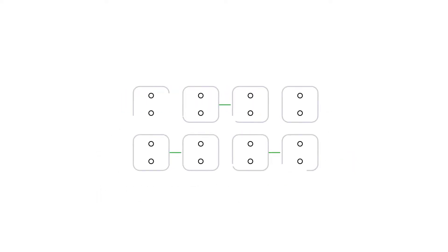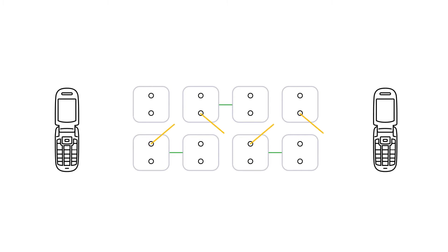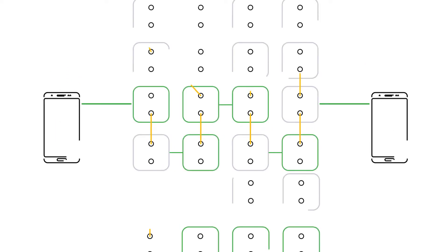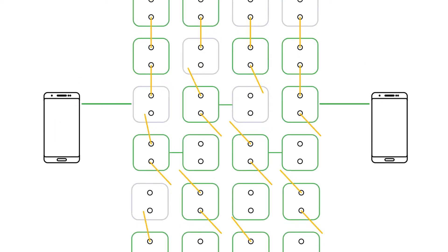The old model was based on circuit switching, where dedicated links were created for each call. This approach was optimized for voice to provide guaranteed quality, but was inefficient and not scalable for data.